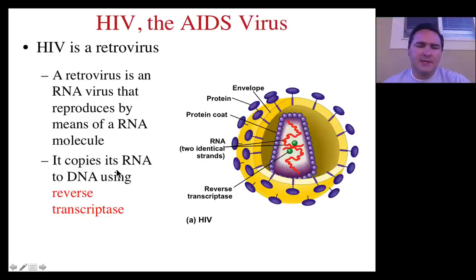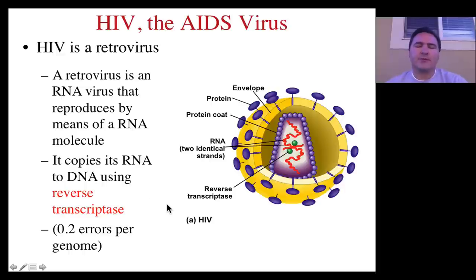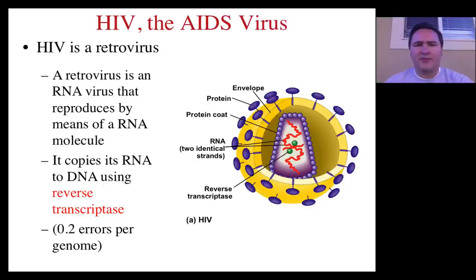As it does this, it must copy that RNA back to DNA using reverse transcriptase. And it turns out that reverse transcriptase is not very accurate at replication — or at retrotranscribing from RNA to DNA. It makes lots of mistakes, many more mistakes than RNA polymerase, for example.